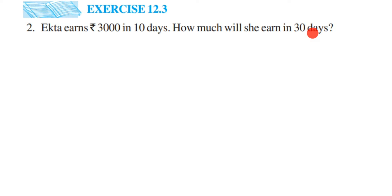Here we have to use unitary method. We're given how much she's earning in 10 days - rupees 3000. To find out for 30 days, we're going to find out for one day how much she's earning. Once we get for one day, we can easily find out for 30 days by multiplying.